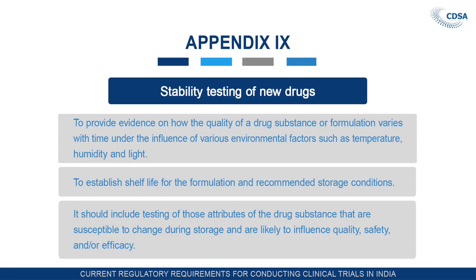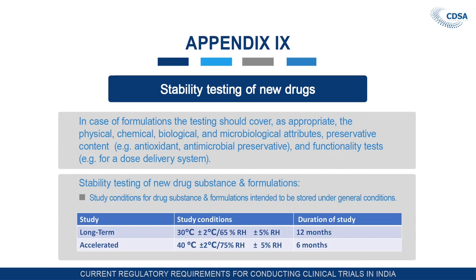Appendix 9 is related to the stability testing of new drugs — whether the drug is stable or not must be proven with documented proof. To provide evidence on how the quality of drug substances or formulations varies with time under the influence of environmental factors such as temperature, humidity and light, stability studies are required. They are also required to establish the shelf life for the formulation and recommended storage conditions. Testing should include those attributes susceptible to change during storage and likely to influence quality, safety and efficacy — covering physical, chemical, biological and microbiological attributes, as well as preservatives.